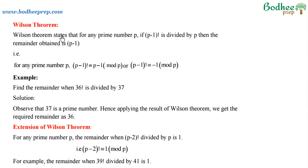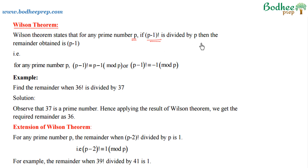Now let us learn another important theorem — Wilson's theorem. A kind of question on remainders is asked wherein we apply the result of Wilson's theorem to get the answer. Wilson's theorem says that if there is any prime number p, then if (p-1)! is divided by p, the remainder obtained is p-1, or equivalently minus 1.